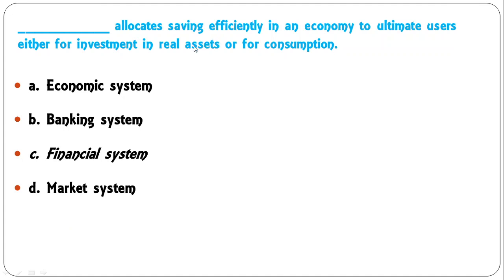Next question: Dash allocates savings efficiently in an economy to ultimate users, either for investment in real assets or for consumption. Options: economic system, banking system, financial system, market system. It is the financial system which allocates savings efficiently. Though banking system is also correct, banking system is part of the overall financial system, so C is more appropriate.